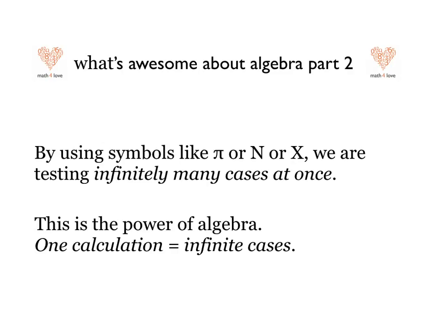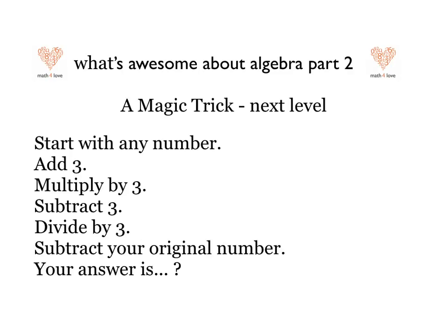I want to show you how this can go even further. Here's the next level of the magic trick: start with any number, but now I've changed all the twos to threes. I'm going to add three, multiply times three, subtract three, divide by three, then subtract my original number. What's the answer going to be? Let's try seven: seven plus three is ten, times three is thirty, subtract three is twenty-seven, divide by three is nine, subtract seven — the answer is two. Will it always be two? Try it with pi or n or x and see what happens.